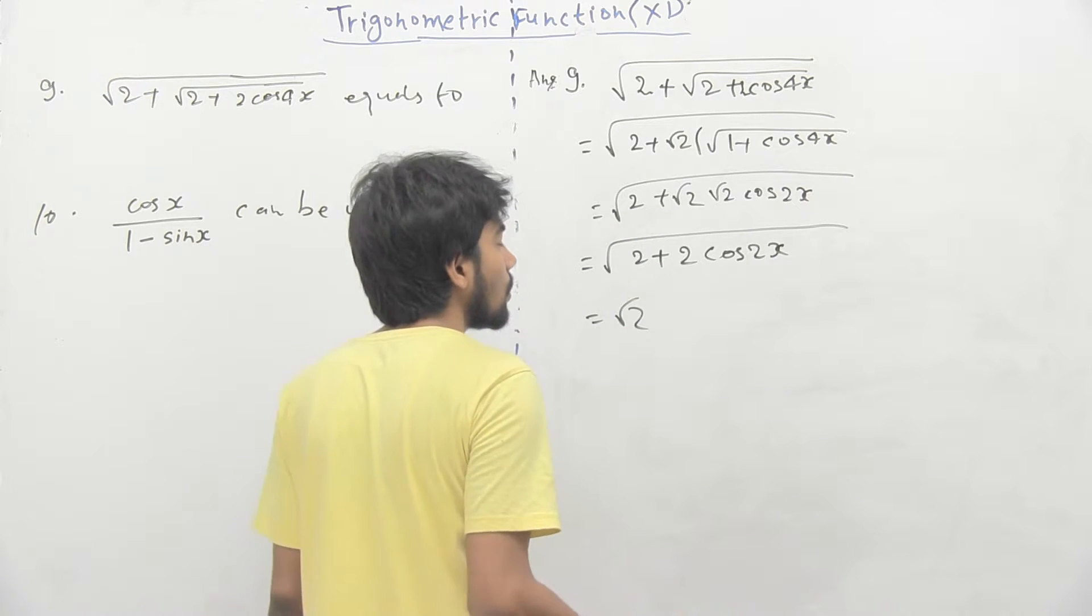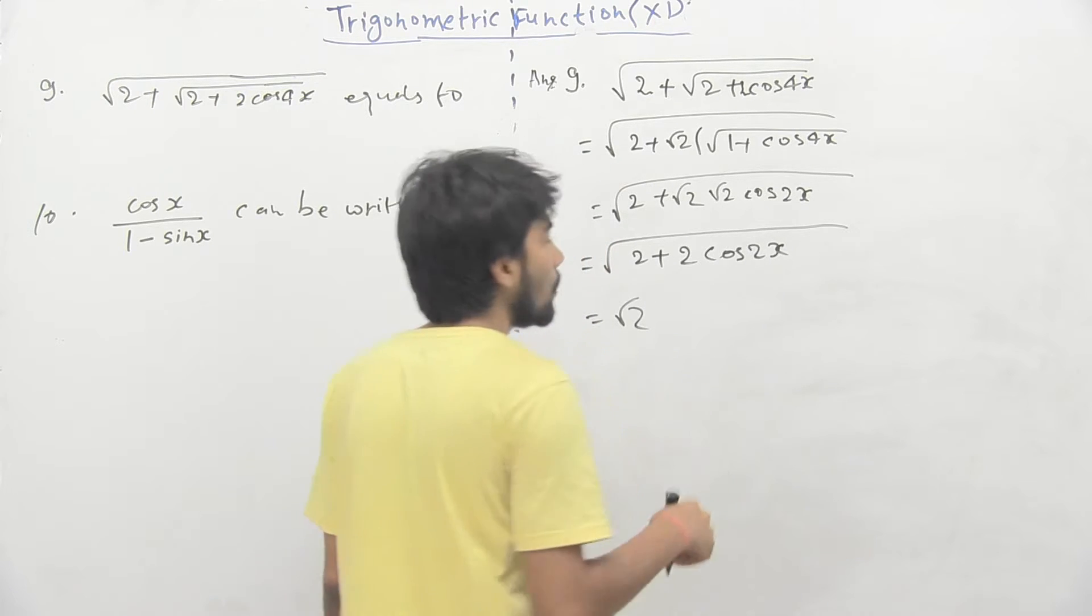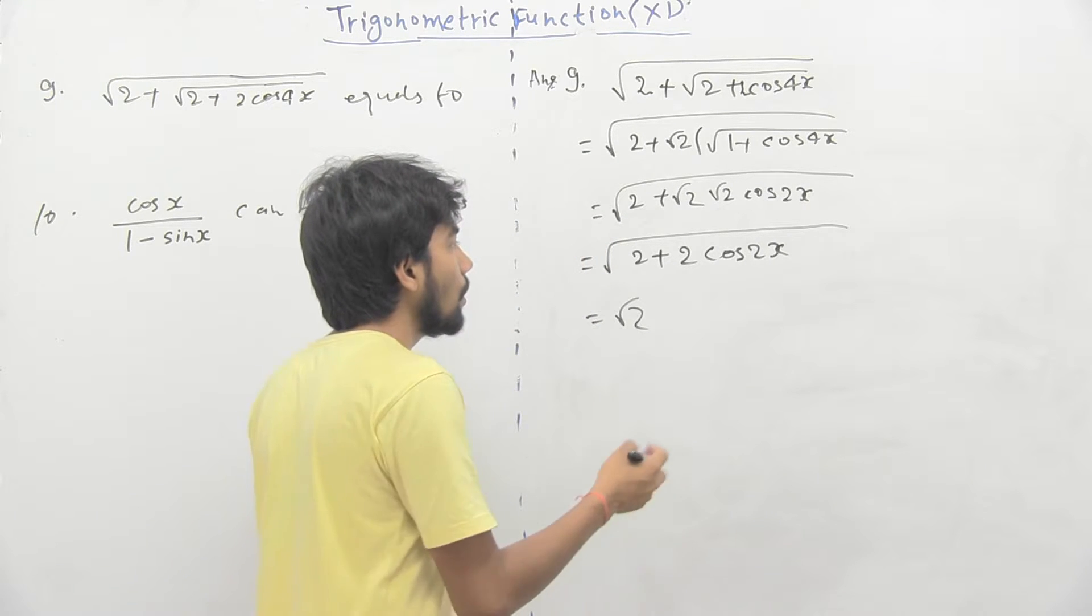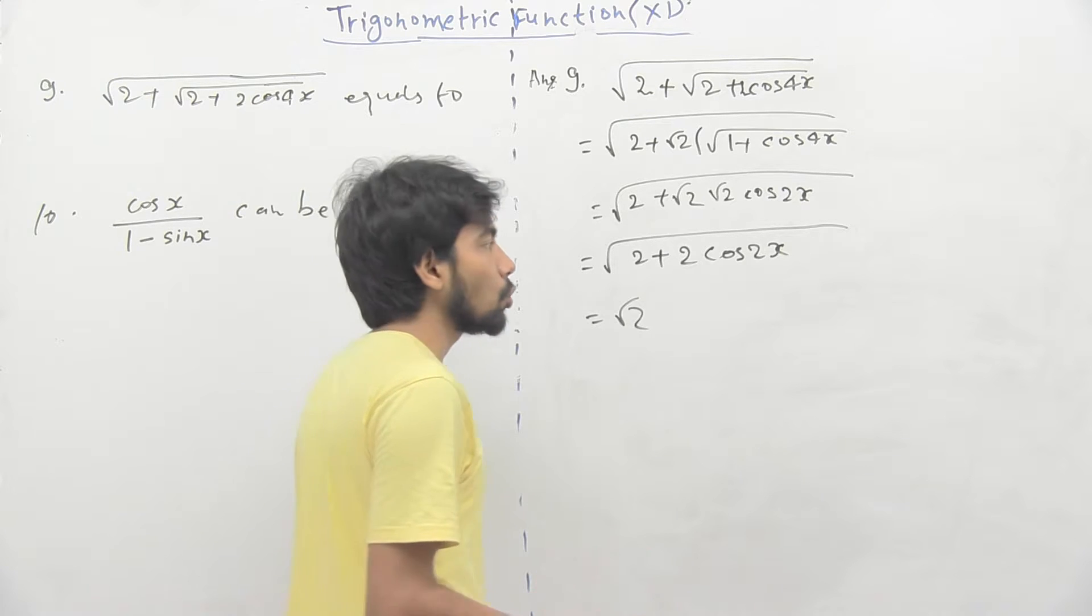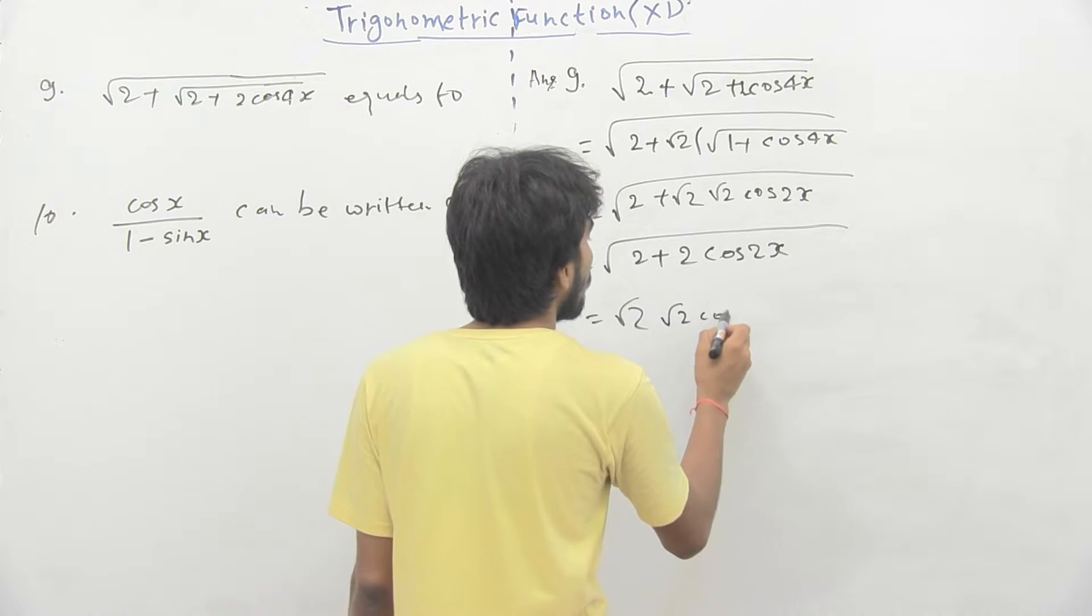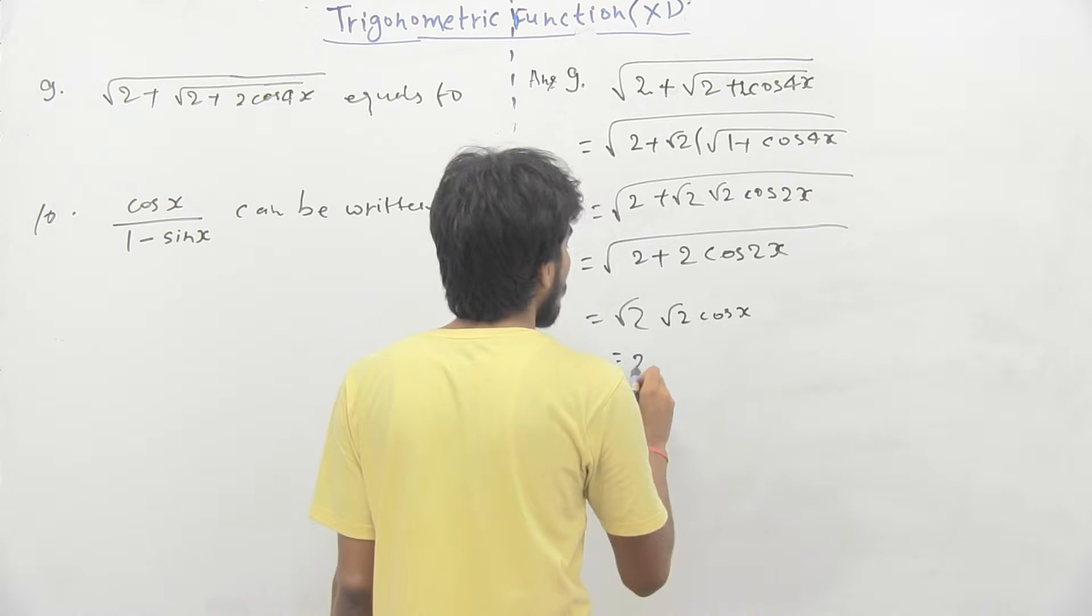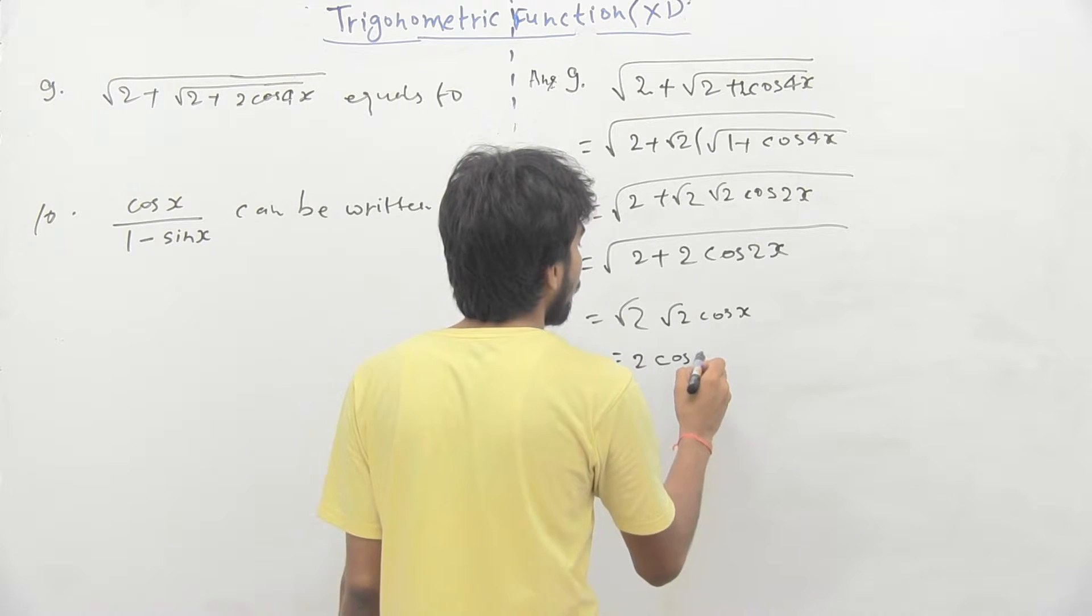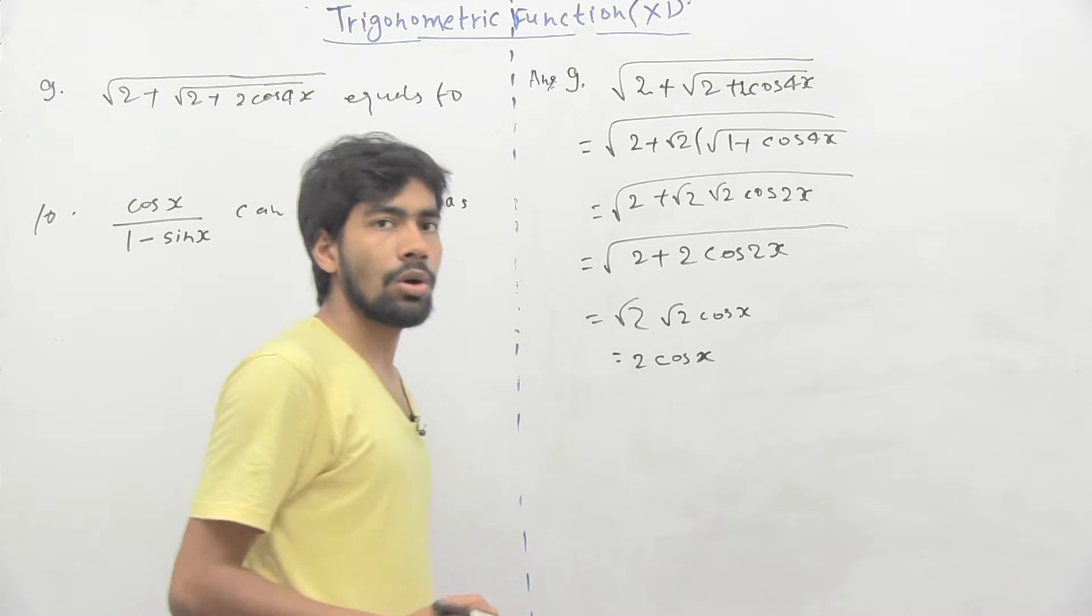Now, doing similarly, we will take root 2 common and we will have root under 1 plus cos 2x, which will give you root 2 of cos x. It will become 2 cos x.